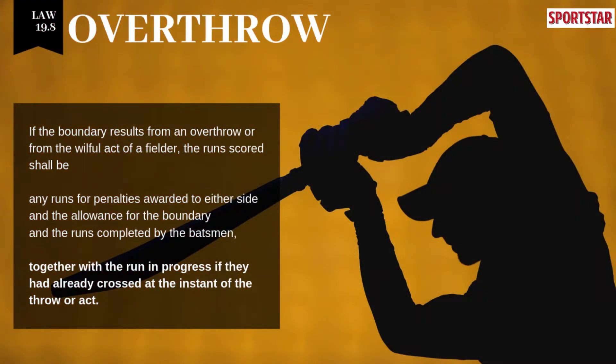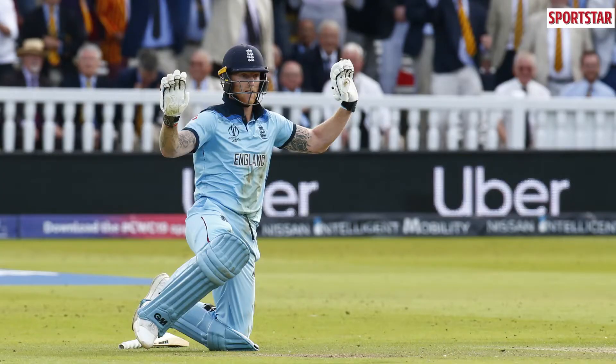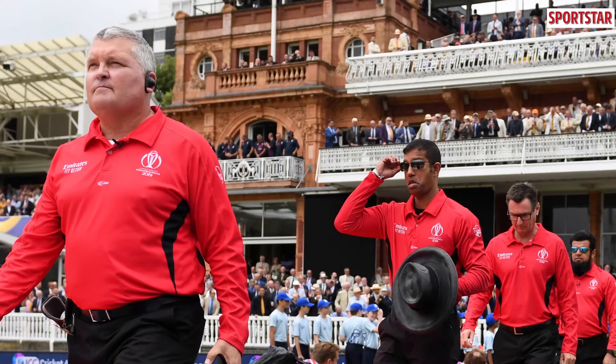Here's how the overthrow rule works. According to Law 19.8 of the MCC rulebook, if the ball is deflected off the batsman during a throw and runs to the boundary, four runs are counted to the batting side. But in this instance, when England had set off for a second run and Guptill threw the ball, both Stokes and Rashid hadn't crossed at the point of release. So only one run from the two should have been added to the overthrow four runs — that's where there has been confusion about how the score was tallied, and a lot of questions have been raised about the umpiring in the aftermath of the final.